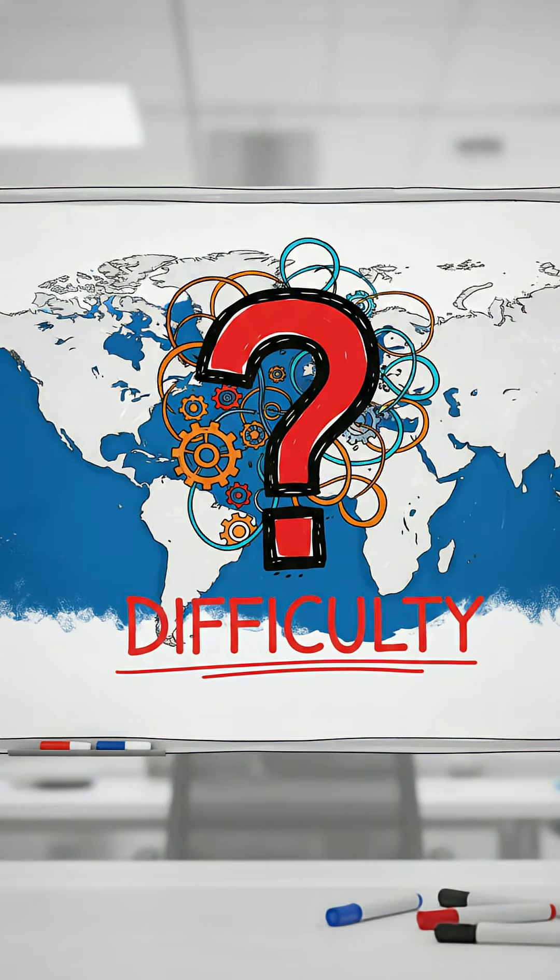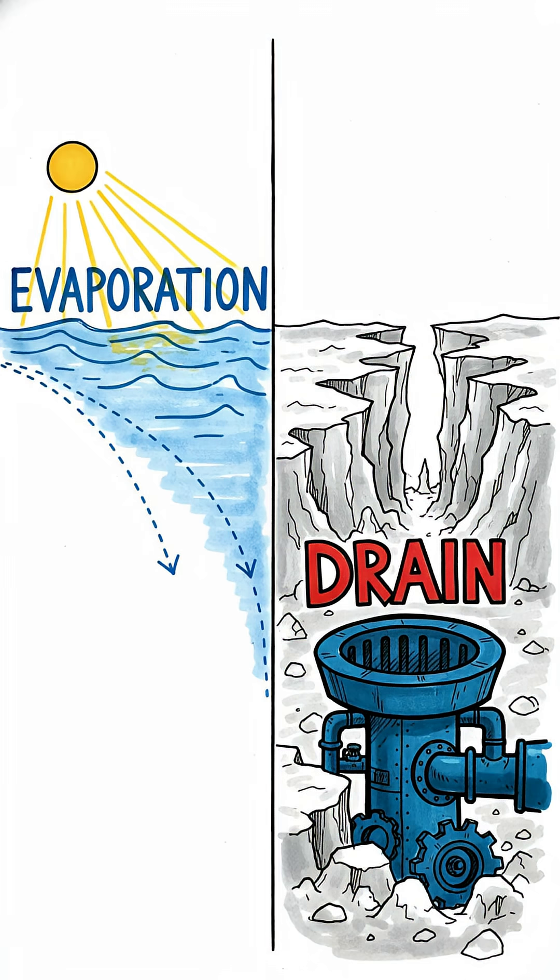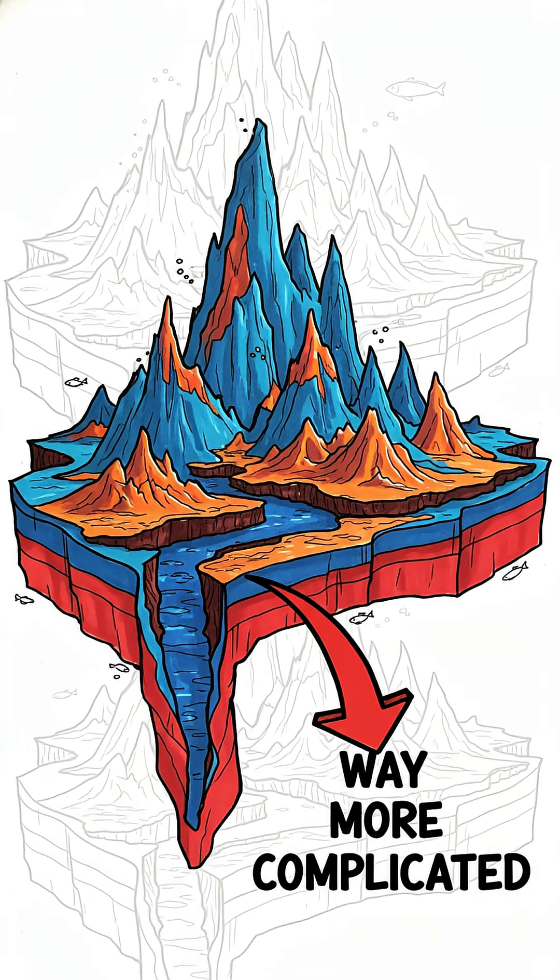This is the brief on mapping the difficulty of draining the oceans. When we imagine draining the ocean, we usually think of simple evaporation, where the sea level just drops evenly everywhere.